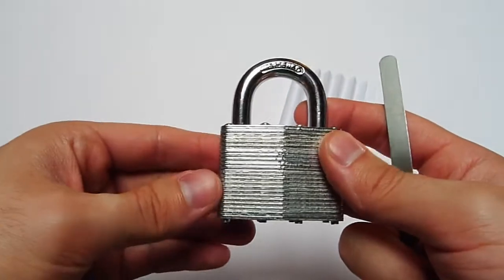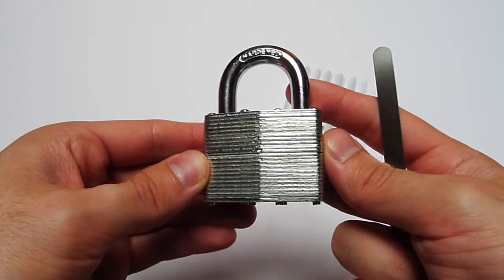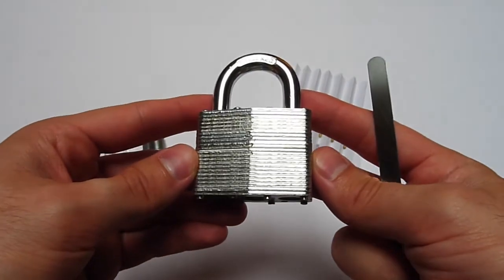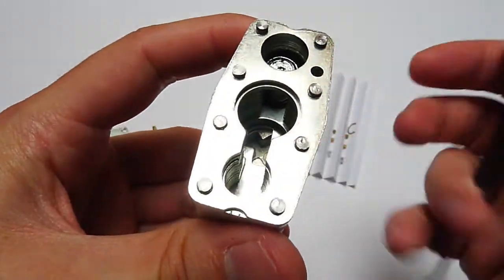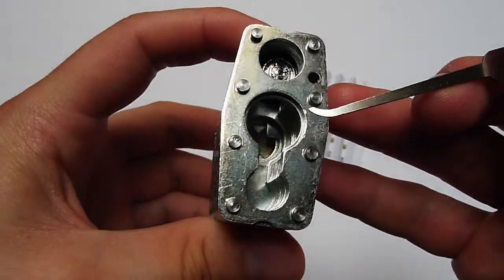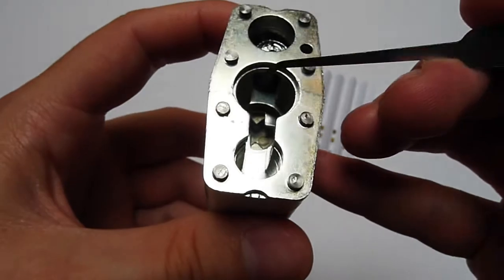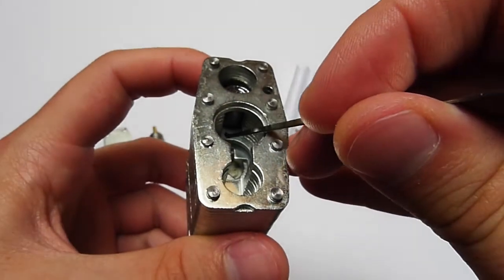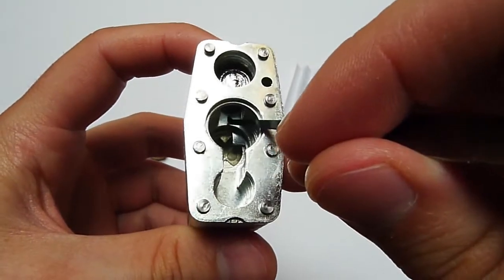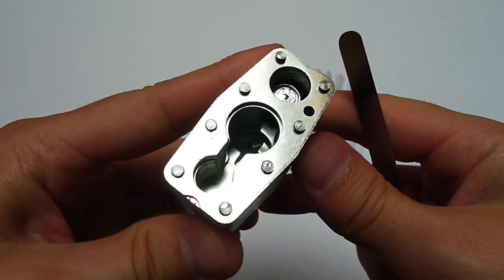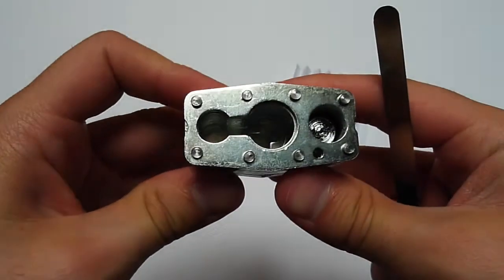Also this is the 50mm version with a thicker shackle than the Commander Lock, but still it weighs the same. Why is that so? Because they've done some things to save material, save weight. We got this window here. This window does not have to be there, this window could be closed, but they got that window to save material I believe.